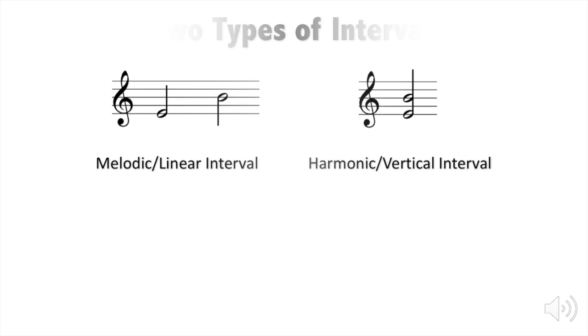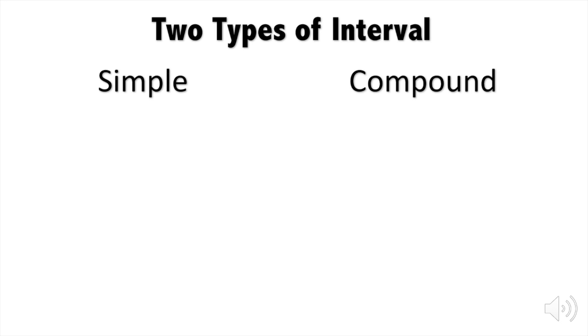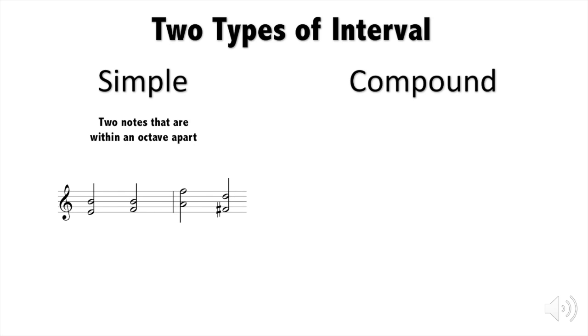There are two main types of intervals: simple and compound. Simple intervals means that the two notes are within the octave. Here are some examples of simple intervals. As you can see, the top note is always within an octave.